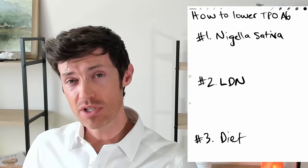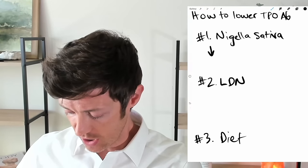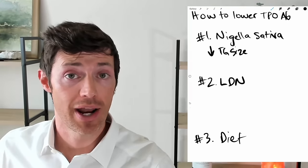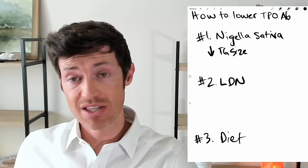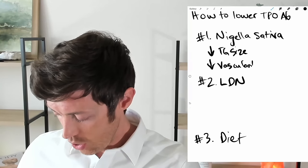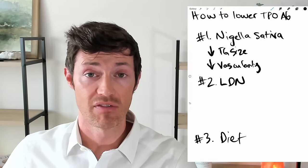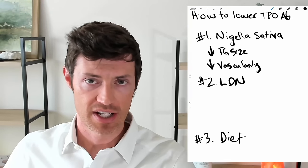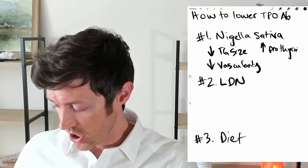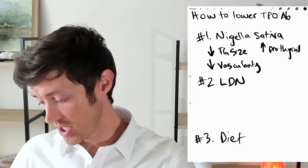The study was relatively small — in the mid-forties or fifties participants or so. It showed that patients who took it saw a decrease in thyroid gland size, which is a really good thing because in Hashimoto's thyroiditis we usually have inflammation which increases the size of the thyroid gland. We also saw a decrease in vascularity — the blood vessels inside the thyroid gland — and an improvement in thyroid lab tests, which did include a decrease in thyroid antibodies.